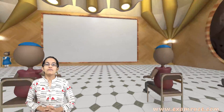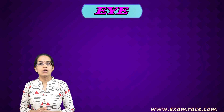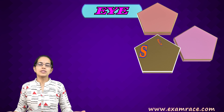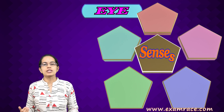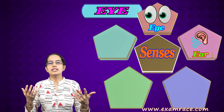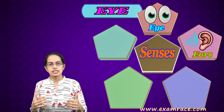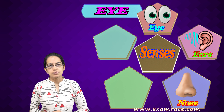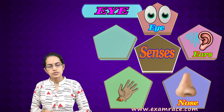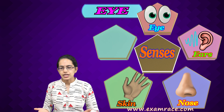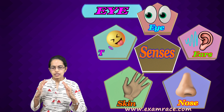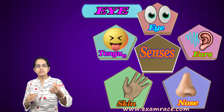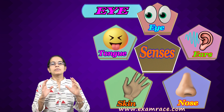Today we would be beginning with a very interesting topic and that is the eye, one of the major sense organs. Now we already know there are five sense organs: we have eye, ears, then we have the sense of smell through the nose, we have the touch receptors which are present in the skin, and then we have the tongue which basically sends the taste.